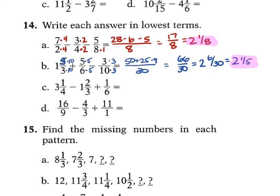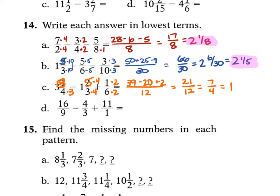For C, 3 and 1 fourth minus 1 and 2 thirds plus 1 over 6: LCD is 12. Convert 3 and 1 fourth to 13 over 4, giving 39 over 12. Convert 1 and 2 thirds to 5 over 3, giving 20 over 12. The 1 over 6 becomes 2 over 12. So 39 minus 20 plus 2 equals 21 over 12, which simplifies to 7 over 4, or 1 and 3 fourths.